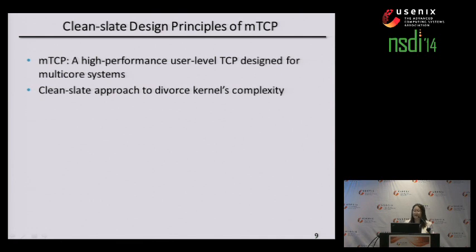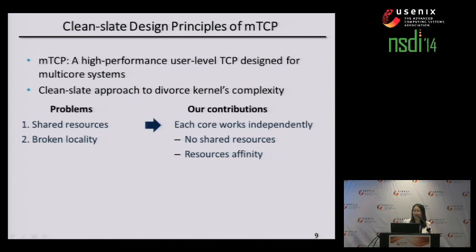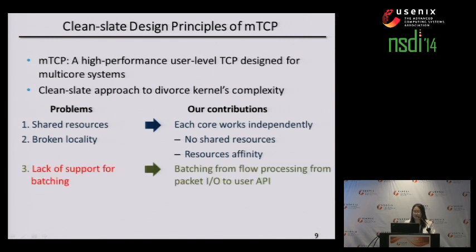To address these inefficiencies, we design and implement MTCP, a high-performance user-level TCP for multi-core systems. Many previous studies attempted solutions while maintaining the current kernel TCP/IP stack. However, we chose a clean-slate design, building the entire TCP stack from scratch to detach from the kernel's complexity. To address the overhead from shared resources and broken locality, the new design allows each core to work totally independent of others with no shared resources — every resource is pinned to the core. To address the lack of batching support, every step from packet IO to the application is batched together.